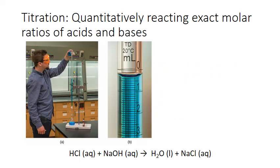In an acid-base titration we have two reactants, an acid and a base. We combine them in a neutralization reaction such as the one depicted here. The acid is neutralized by the base to form water and a salt. In a titration we combine our reactants together in carefully controlled amounts because we're trying to capture the exact point at which the acid present in our solution has exactly reacted with all the added base, in the exact molar ratio indicated by the balanced chemical equation.